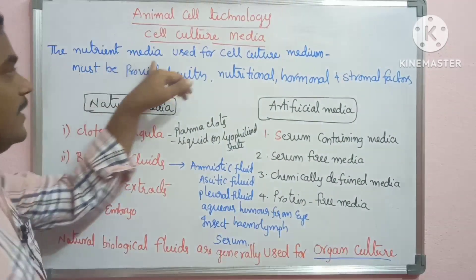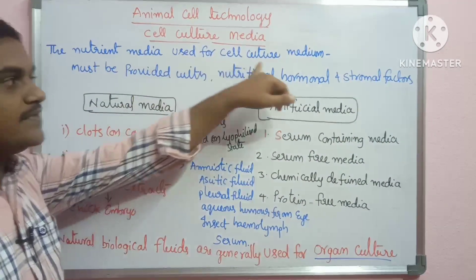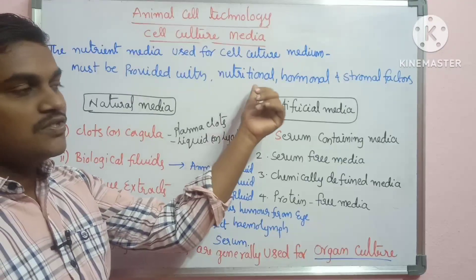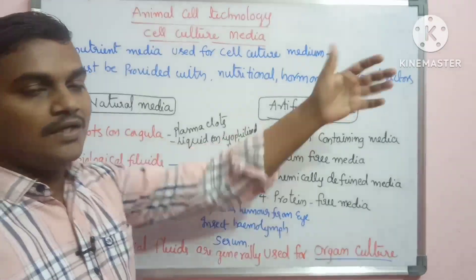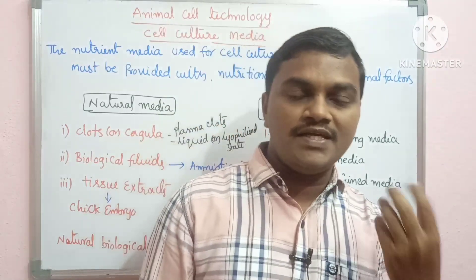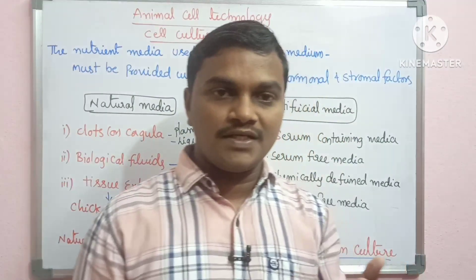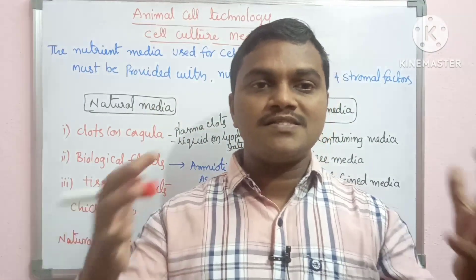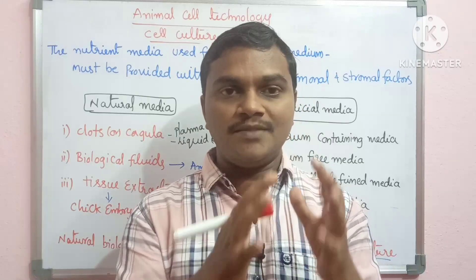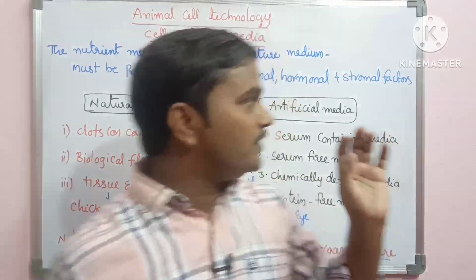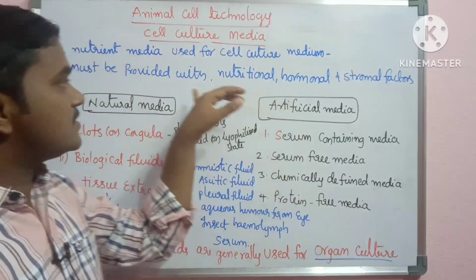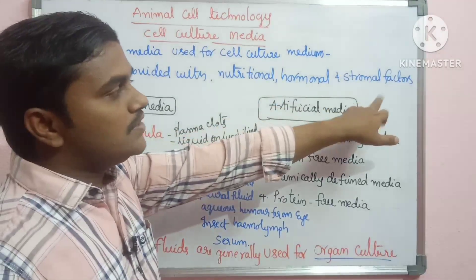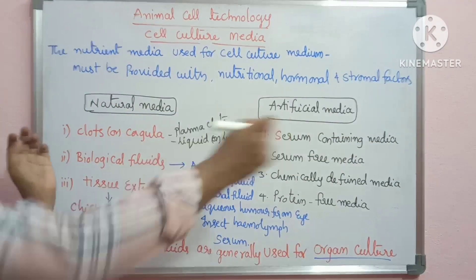The nutrient media used for cell culture must be provided with nutritional, hormonal, and stromal factors. If you have a cell culture, tissue, or organ, there are some factors that must be provided to that medium — nutritional, hormonal, and stromal factors.